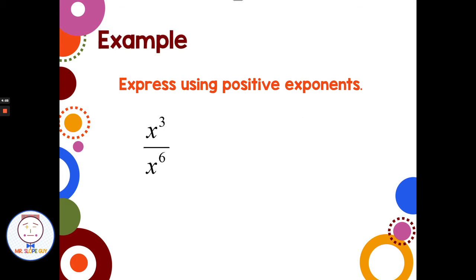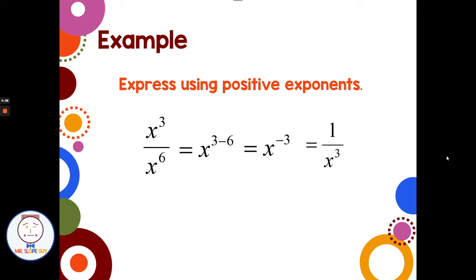Let's say we have x to the third divided by x to the sixth. Dividing with the same base, we subtract exponents: three minus six gives us x to the negative three. The law of negative exponents says x to the negative three power equals 1 over x to the third.